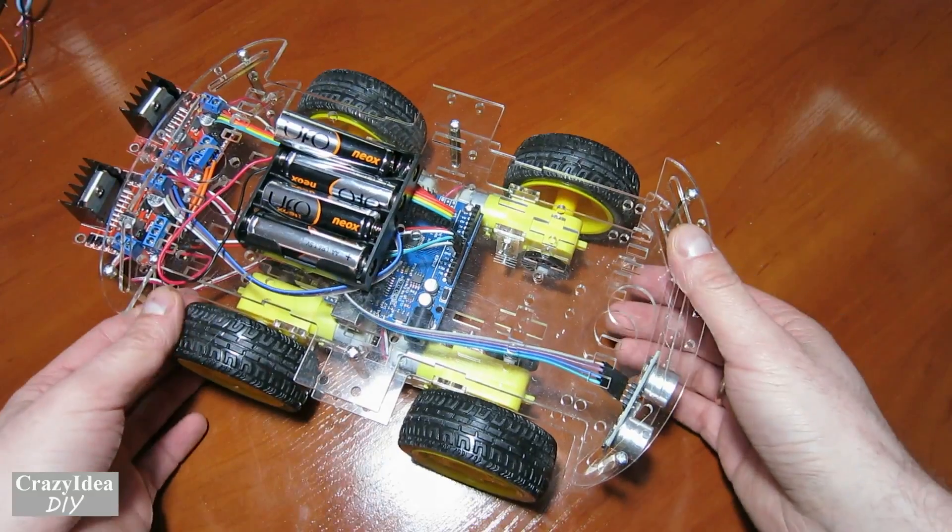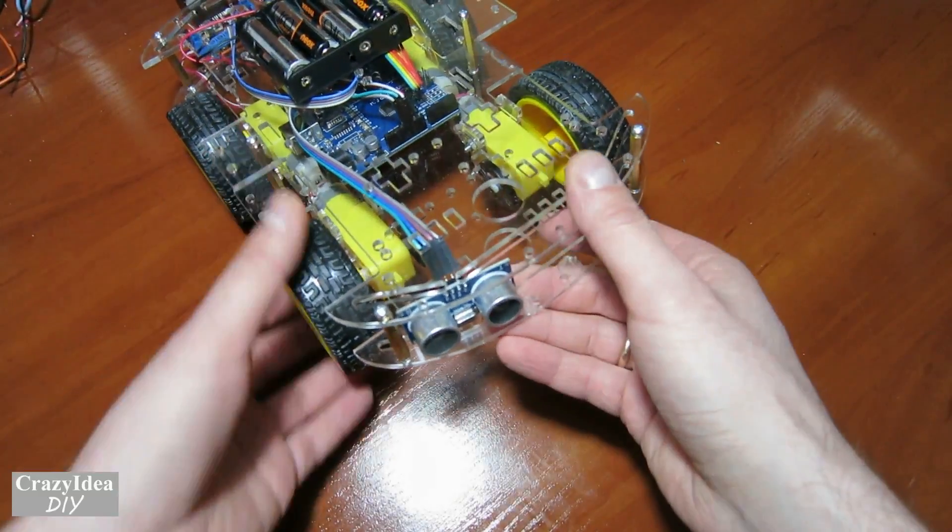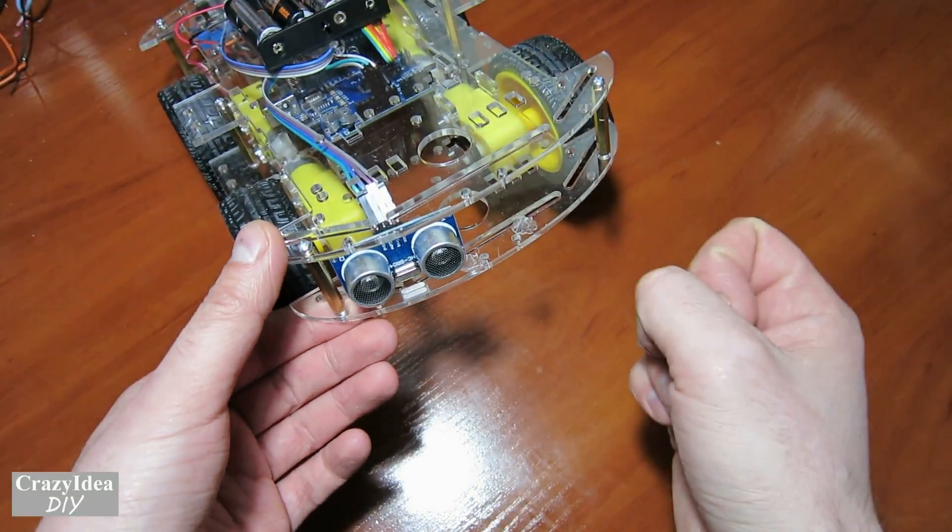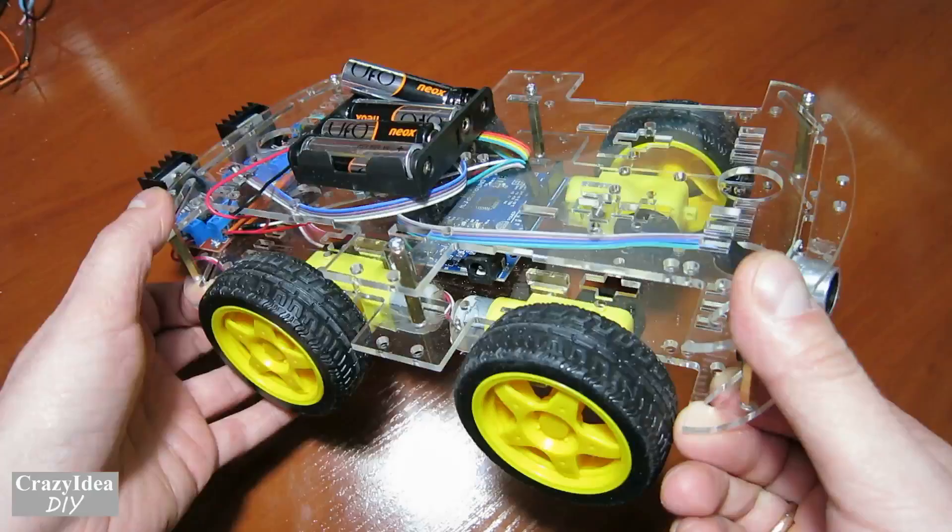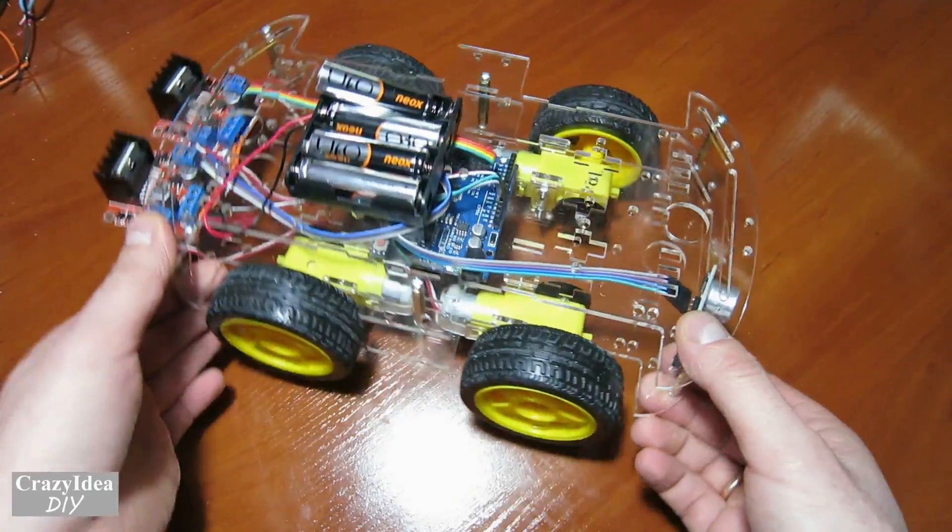So friends, as you can see, the car came out very cool, but I wanted a little remake. The car needs another sensor or actuator. If we add one of these devices, then this car will not scratch the wall sideways, as you saw.